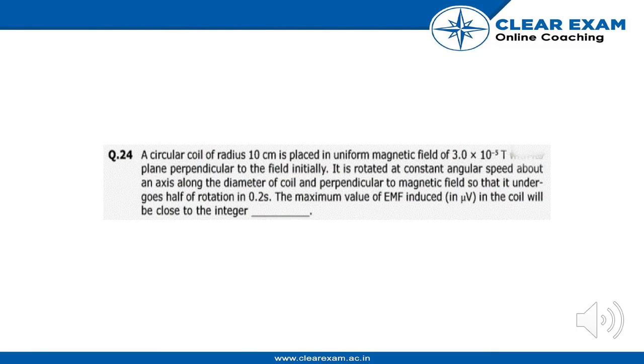Now we have the 24th question. A circular coil of radius 10 centimeters is placed in a uniform magnetic field of 3.0 times 10 to the power minus 5 tesla, and the plane is perpendicular to the field initially.